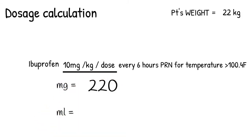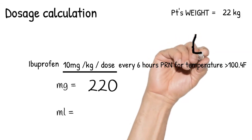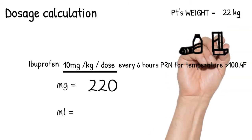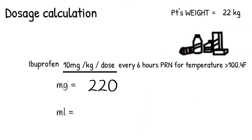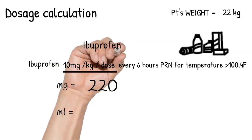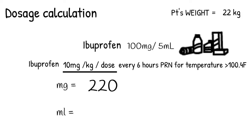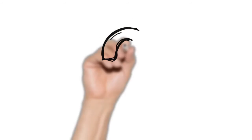Based on this dose, how much volume are we going to dispense? What other information do we need to calculate for that? The concentration — the availability of the medication — and we find it on the medication label, the box, or container. In your scenarios, it will be written right next to the name of the drug. Ibuprofen comes in 100 milligrams per 5ml in suspension form, and based on this concentration, we get 11 mls. We will now pause the video to discuss any concerns or questions you may have.